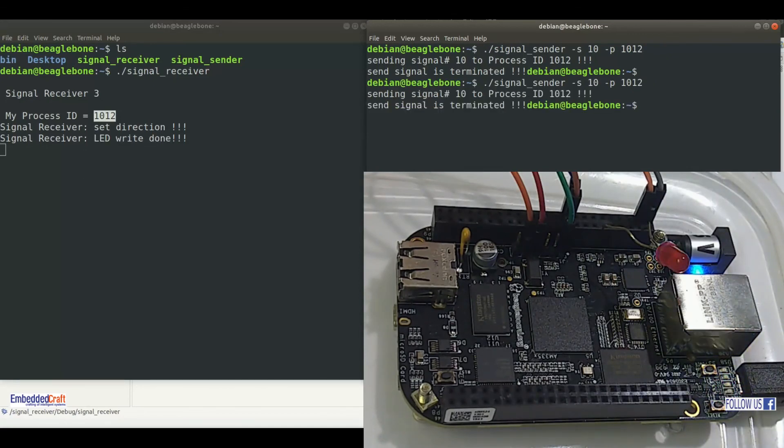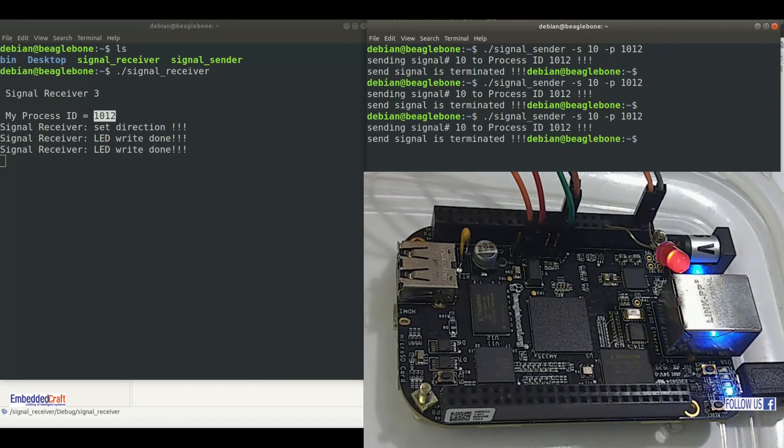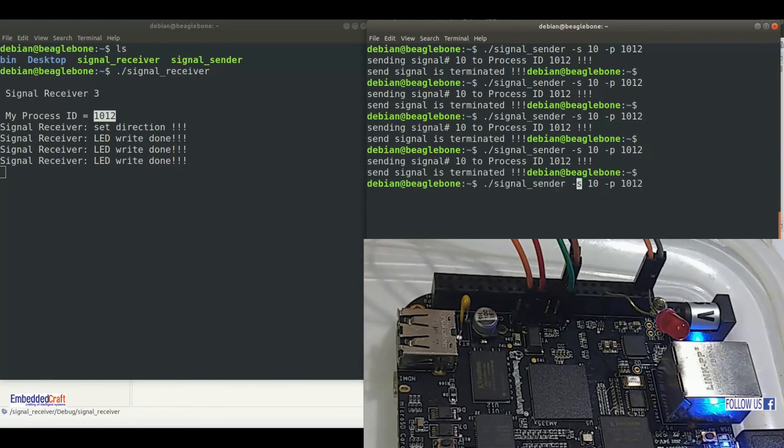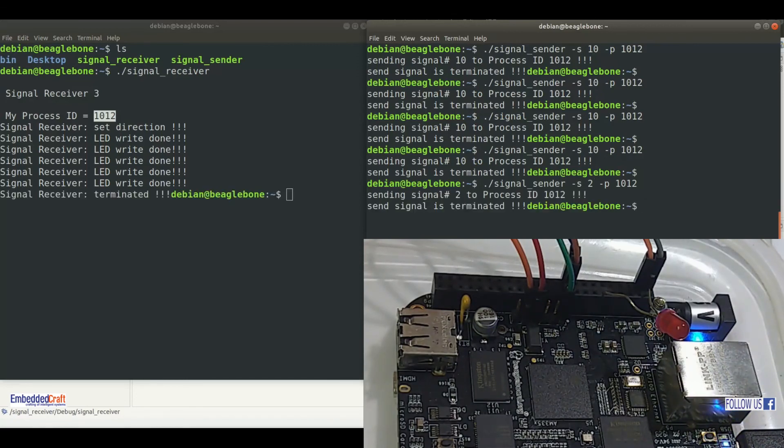If we again send signal number 10, LED is toggled. In this way whenever we send signal, receiver process receives the signal and runs signal handler, and signal handler is toggling LED. If we send signal number 2, which is SIGINT, this should terminate our signal receiver process. Wow, process is terminated. This is working as per our expectation.